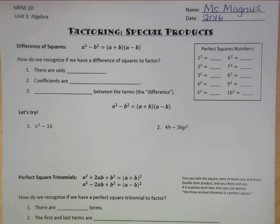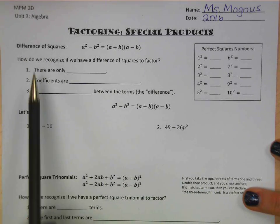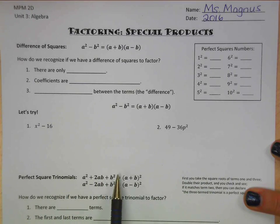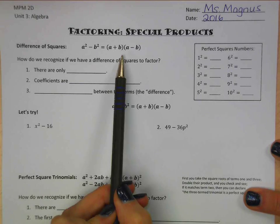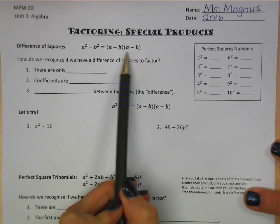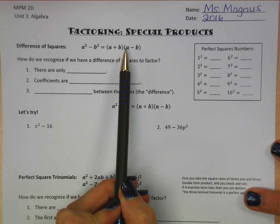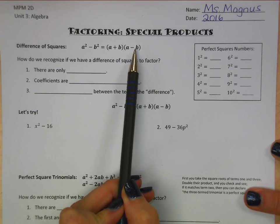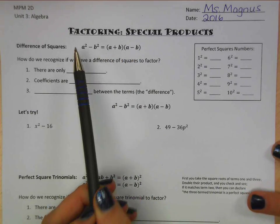Today we're going to continue our discussion on factoring, looking at special products. Two we're going to see are difference of squares and perfect square trinomials. We already learned how to get these by expanding, but now we're going to figure out how to get the factors — what two things multiply together to give us that. That's what a factor is.